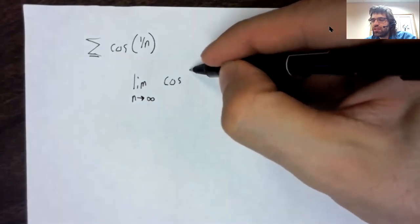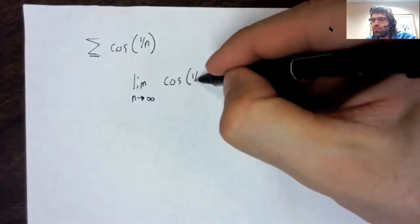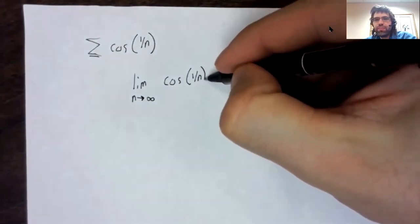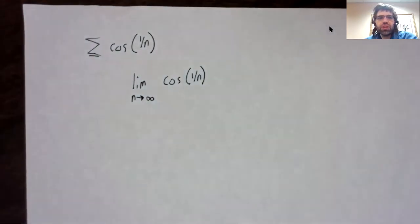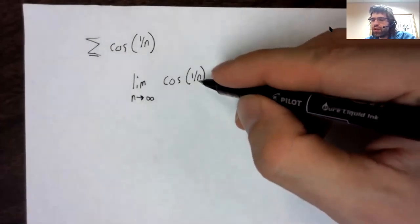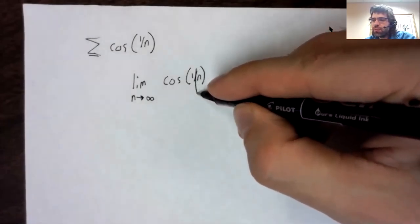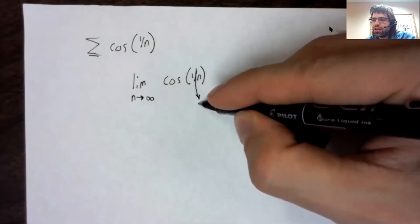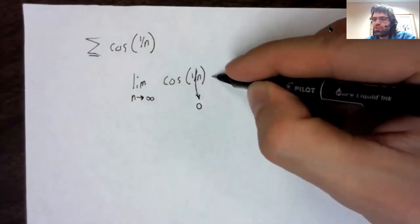What's the limit as n goes to infinity of the cosine of one over n? Well, as n goes to infinity, one over n goes to zero.